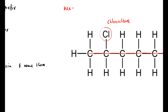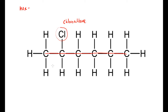Rule three — number the functional group. Number the carbons from one end to the other. A good rule of thumb is that the functional group should have the lowest number possible. Starting from the left gives us the chlorine on carbon 2, whereas starting from the right would put it on carbon 5. So we number left to right: one, two, three, four, five, six — chlorine is on the second carbon.